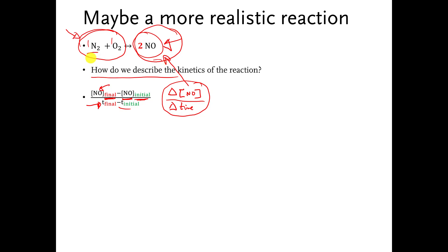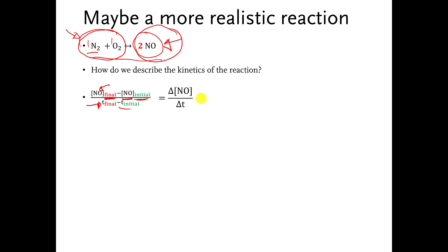So to describe the speed of this chemical reaction, we calculate how fast the concentration of NO is changing divided by how much time it takes to make that change. The square brackets mean concentration and the deltas mean change. Since we're dividing by time, this gives us a rate.